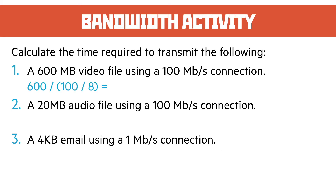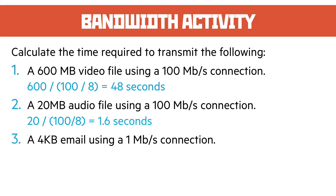So that calculation looks like 600 divided by 100 divided by 8, and that gives us the answer of 48 seconds. A 600 megabyte video file using a 100 megabit connection would take 48 seconds to transmit. A 20 megabyte audio file on the same connection is the same calculation but with 20 this time — we end up with 1.6 seconds.